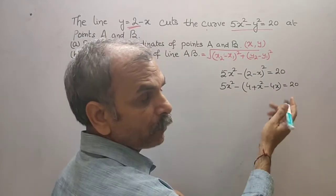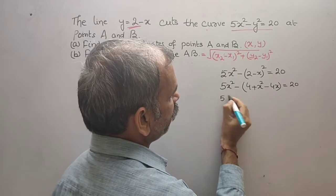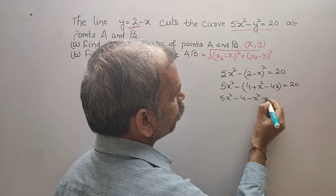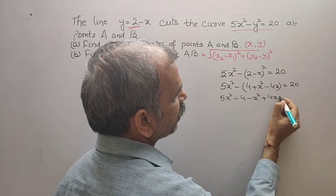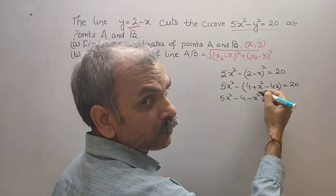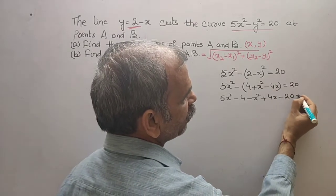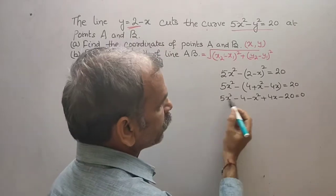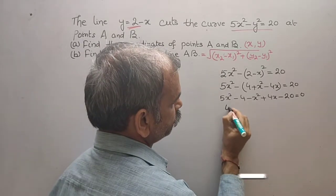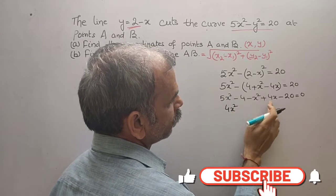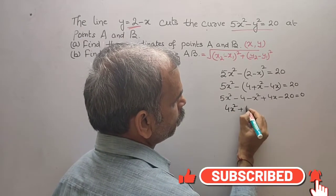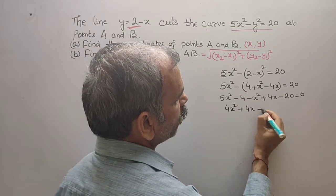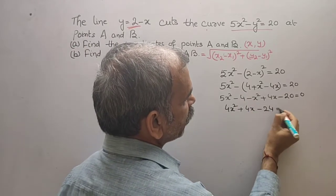We will get 5x² minus, now A minus B whole square, that is your 4 + x² - 4x, that is equal to 20. Now open the bracket. What you will get? 5x² - 4 - x² + 4x, and bring this to left side, we will get -20. That gives you 0.